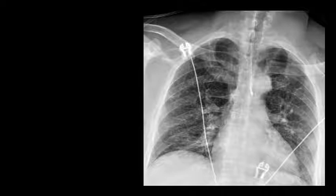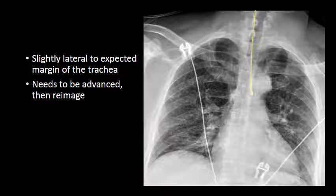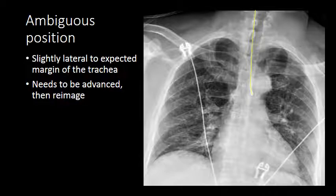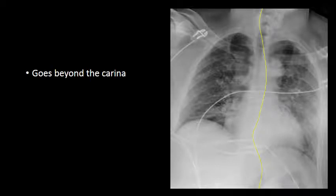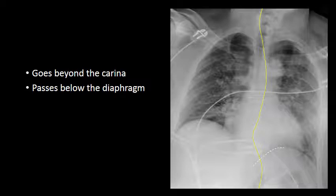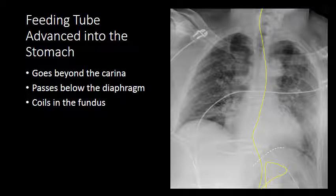Here is an example of a two-step feeding tube placement. On this initial radiograph, we see the feeding tube with the tip terminating just above the level of the carina. This tube appears somewhat lateral to the expected margin of the trachea, but to confirm its location within the esophagus, it needs to be advanced and then re-imaged. When the tube is advanced further, we now see that it courses beyond the carina down below the diaphragm, with loops of the catheter within the fundus of the stomach.